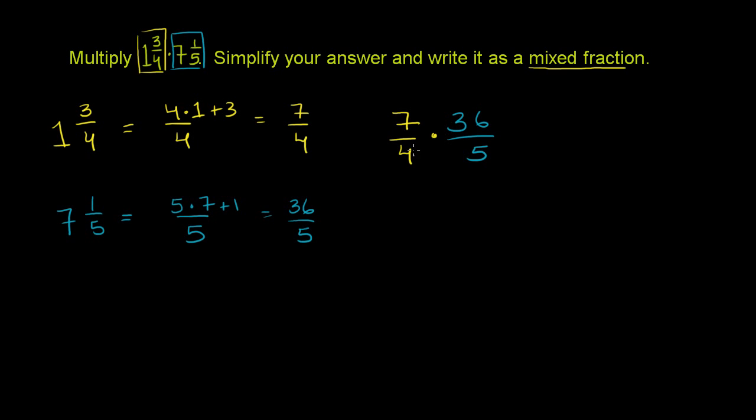Both our numerator and our denominators have numbers that are divisible by 4, so let's divide both the numerator and the denominator by 4. So the numerator, we can divide the 36 by 4 and get 9. And if you divide something in the numerator by 4, you have to divide something in the denominator by 4, and the 4 is the obvious guy. So 4 divided by 4 is 1.